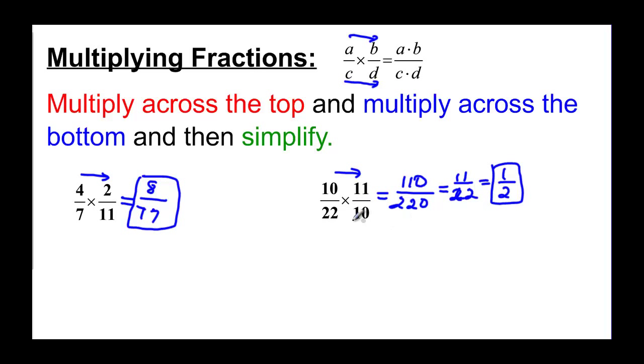I'm saying to you that sometimes you can reduce ahead of time, because remember if you have a common factor top and bottom you can reduce them. I have a common factor of 10 here. There's a 10 on the top and a 10 on the bottom, so they really kind of cancel each other out.